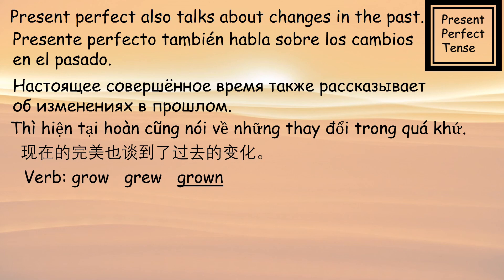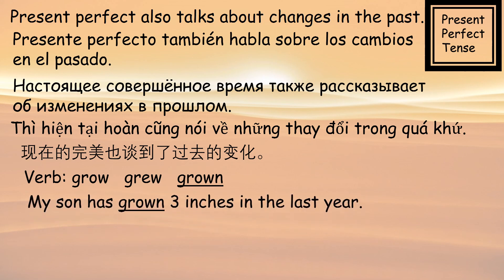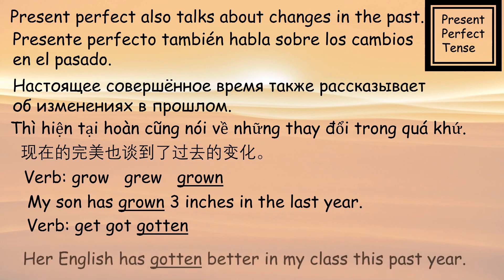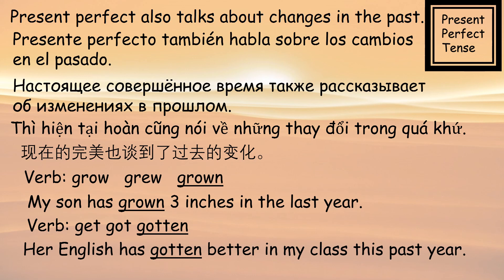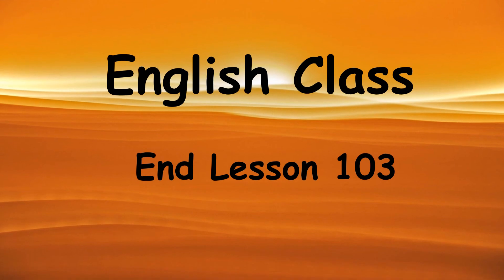Verb 'grow,' past tense 'grew,' past participle 'grown.' My son has grown three inches in the last year. Verb 'get,' past tense 'got,' past participle 'gotten.' Her English has gotten better in my class this past year. Both of these sentences show how things have changed in the last year. This is the end of Beginning English Class Lesson 103. Thank you for watching.